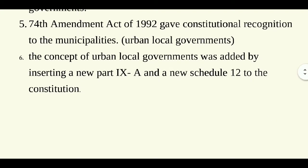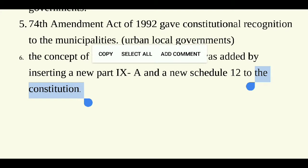So municipalities are established for urban areas. The concept of urban local governments was added by inserting a new Part 9A and a new Schedule 12 into the Constitution. So we have discussed two constitutional amendments — the 73rd and the 74th — and their respective Parts and Schedules.